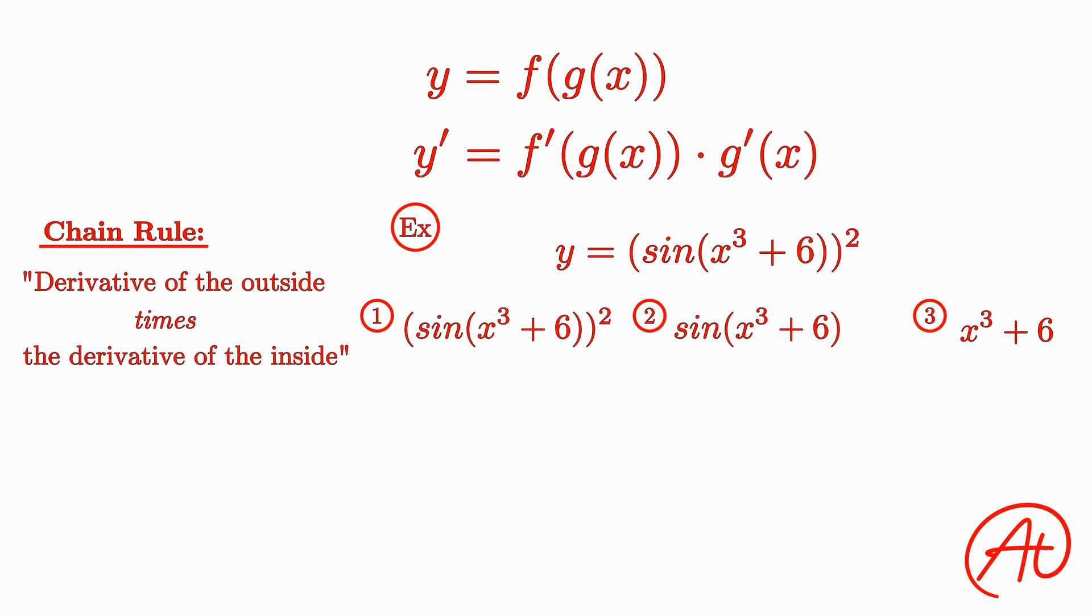Now let's take the derivative of each of these. First, when you have something squared, the derivative is 2 times that thing. Replacing that something with what it was, we get 2 times sin(x cubed plus 6). Next, taking the derivative of sin of something, we get cos of that thing. Again, replacing that something, we get cos(x cubed plus 6).